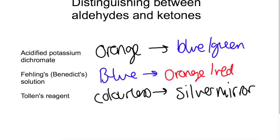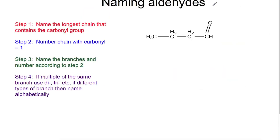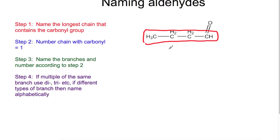Let's have a look at naming aldehydes and ketones. We follow the exact same rules that we have followed for all of our other naming. You find the longest chain that contains the carbonyl. For this example we have four carbons. You number the chain starting with the carbonyl, but for an aldehyde that will always be number one. If you have any branches you would add those on as usual. So this is an aldehyde with four carbons — aldehydes end in 'al', so we've got butanal.